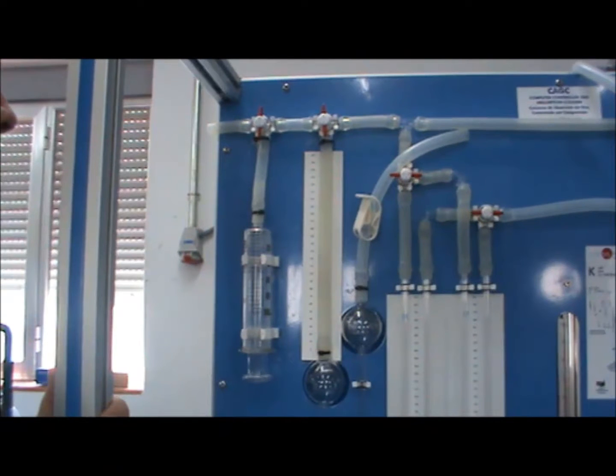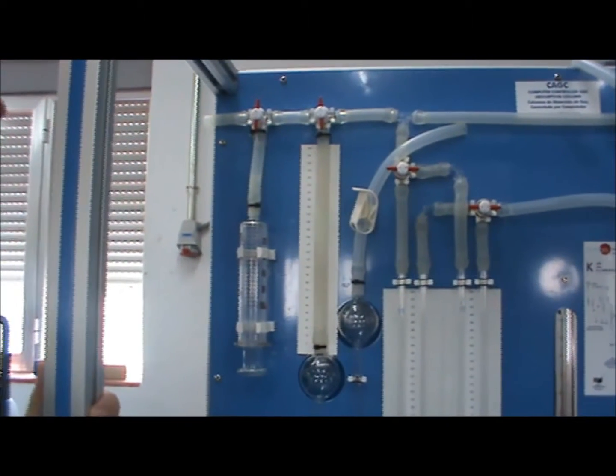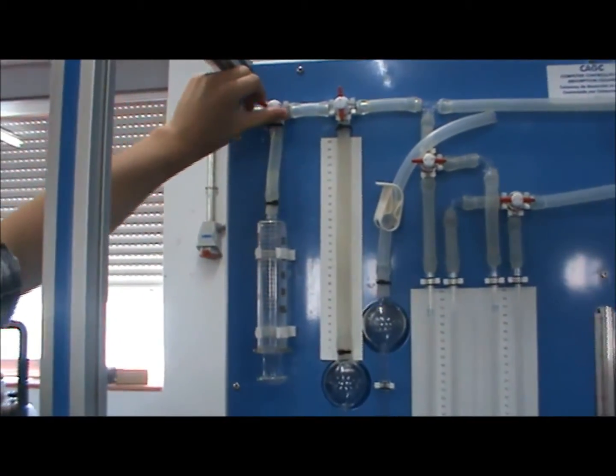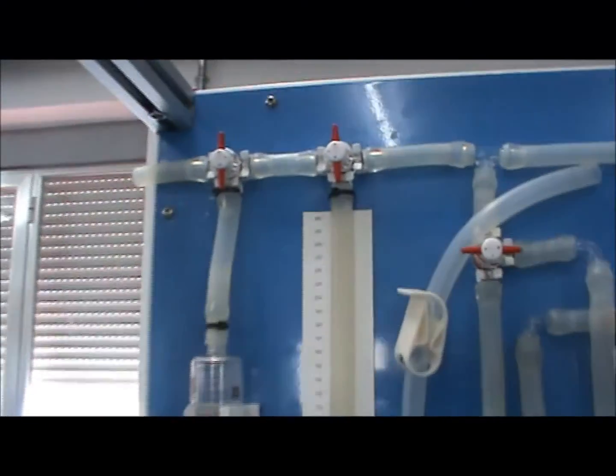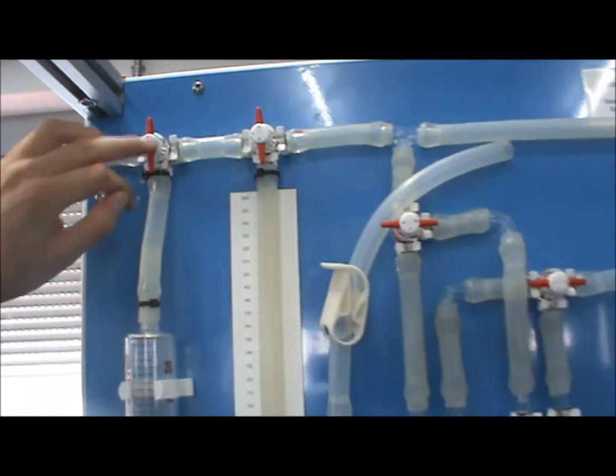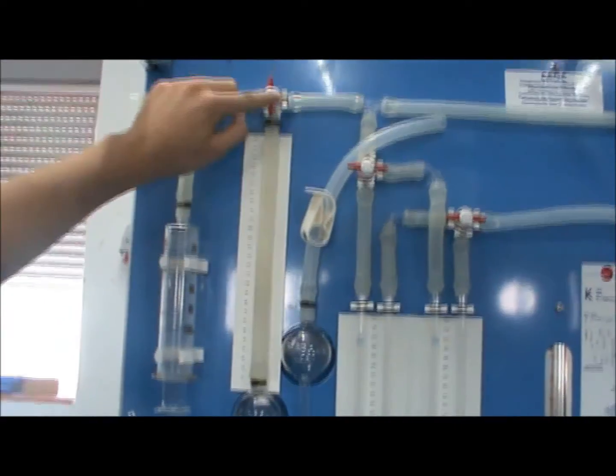Make sure the syringe is fully compressed by expelling the air to the atmosphere. Close valve VT3 to the atmosphere, which connects the syringe in this circuit, allowing it to charge the KOH solution to the vessels.